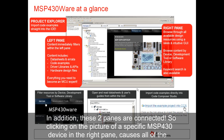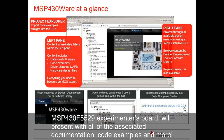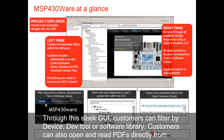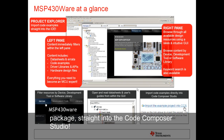In addition, these two panes are connected, so clicking on the picture of a specific MSP430 device in the right pane causes all of the relevant content to filter and present itself immediately within the left pane. In the example in this screenshot, clicking on the MSP430 F5529 experimenters board will present all of the associated documentation, code examples, and more. Customers can open and read PDFs directly from within the window.